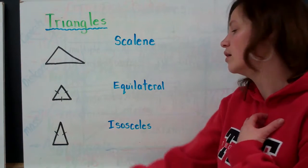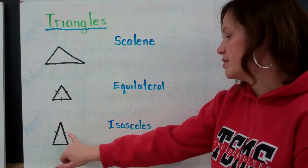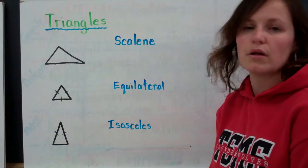In an isosceles triangle, there are two equal sides, as you can see by these symbols, and there are also two equal angles.